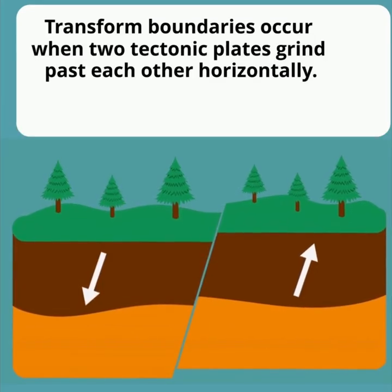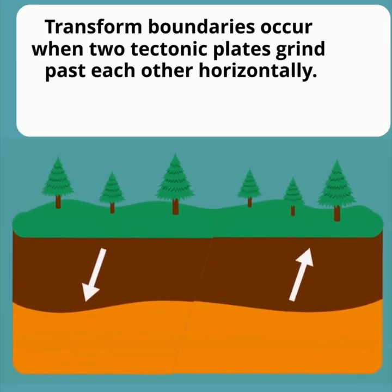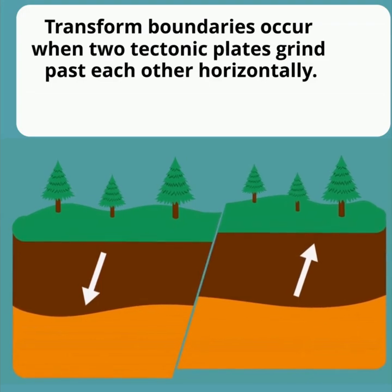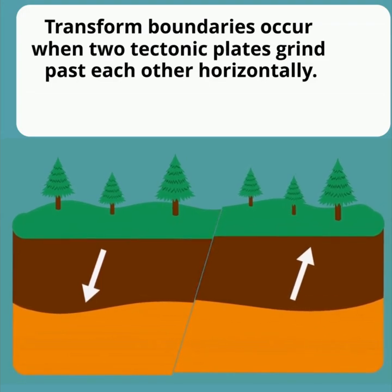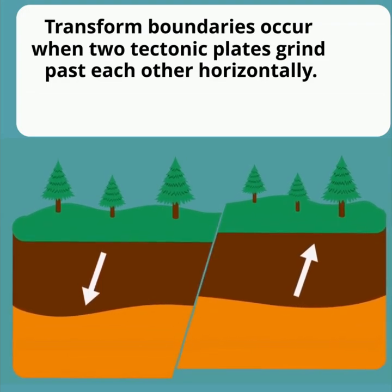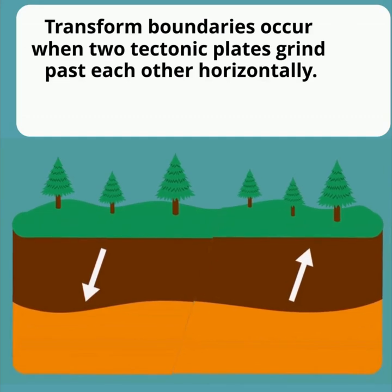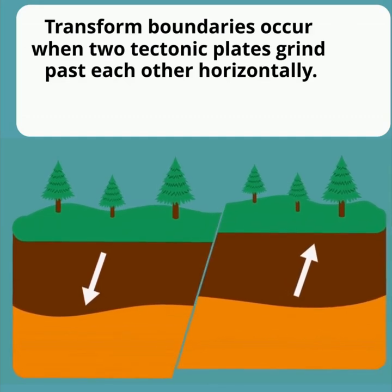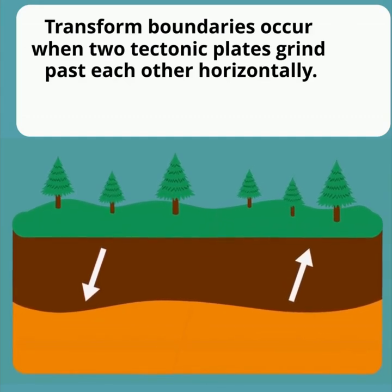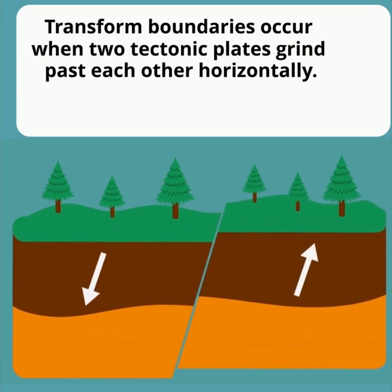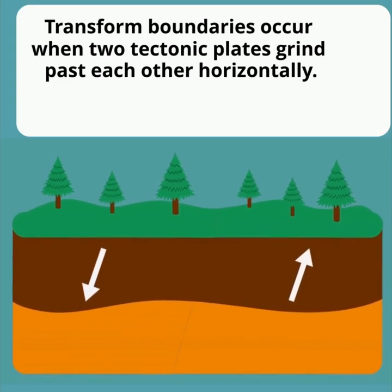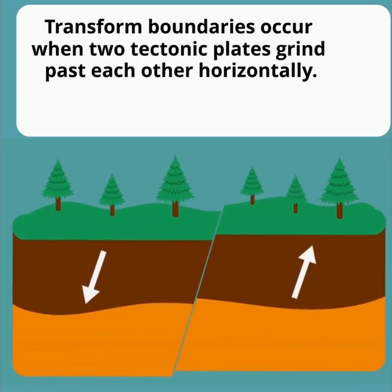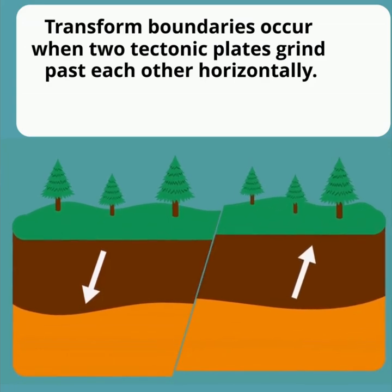Transform boundaries occur when two tectonic plates slide past each other horizontally along a fault line, without creating or destroying crust. As the plates move, they don't glide smoothly. Instead, friction causes them to stick, and stress builds up over time. When that stress is finally released, it results in a sudden, powerful movement of the Earth's crust, which we feel as an earthquake.